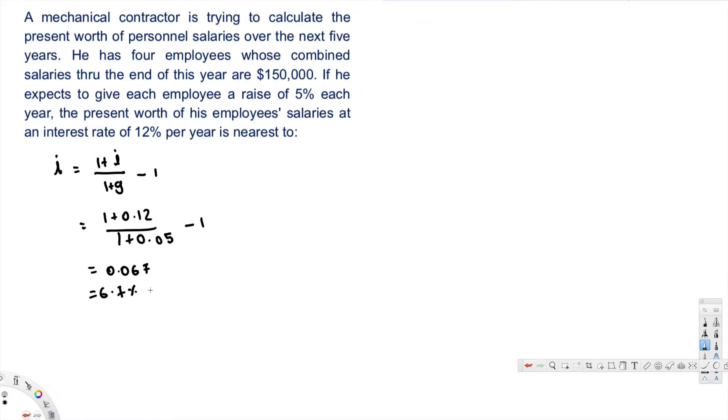Now the next thing is we are going to calculate P. P is what we are trying to find. To calculate P, first of all let's rearrange this equation. P is equal to A times (P/A, g, i, n), and this can also be written as A times (P/A, i, n) over (1+g). We can take the (1+g) to this side: A over (1+g) multiplied by (P/A, i, n).